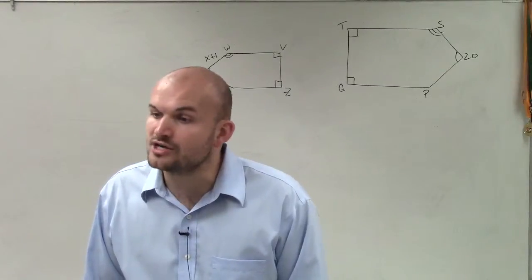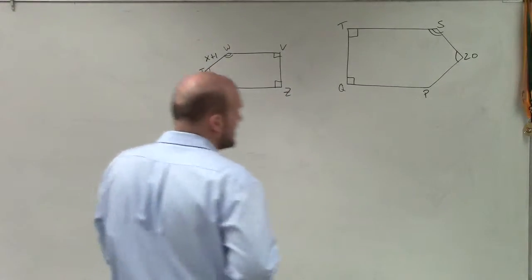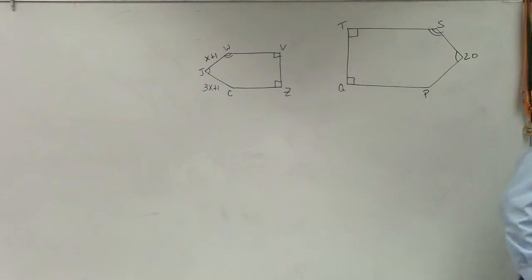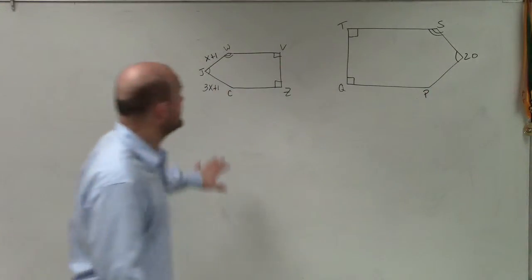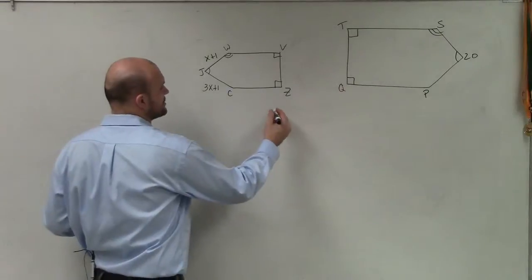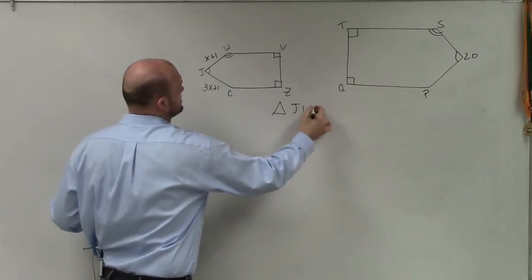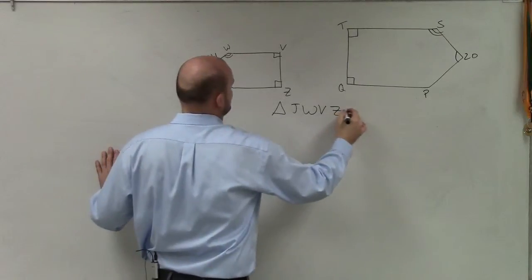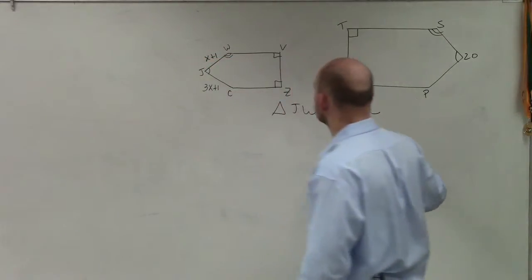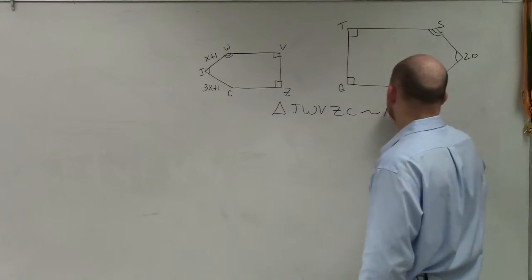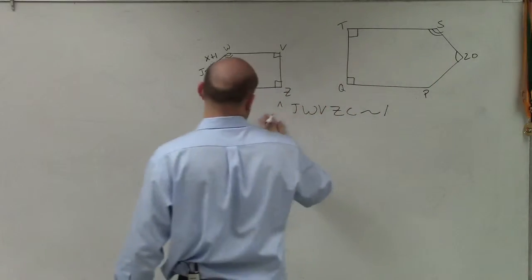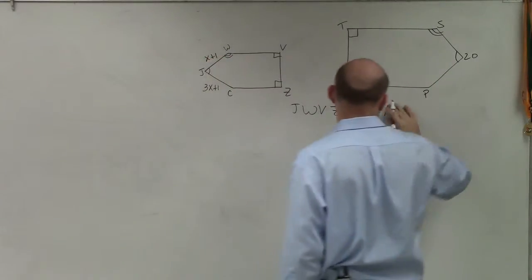But they are similar. And I forgot to actually write in the congruency statement for this. But this one does say, on this problem, it actually does give us the congruency. Actually, well, we don't even need the congruency. But you guys can see that if I was going to say that these triangles are congruent, triangle JWV, Z, C is similar. Did you just say triangle? I'm sorry, not triangle, quadrilateral. Or not even quadrilateral, pentagon.